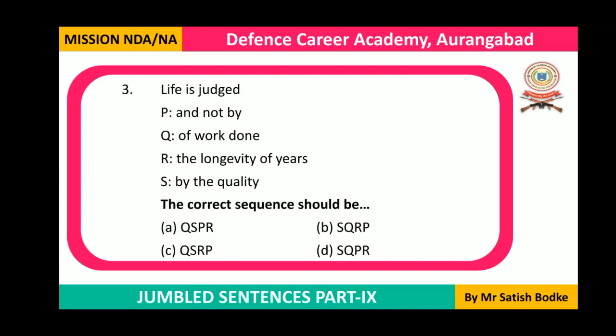Question number three: Life is judged by the quality of work done, and not by the longevity of years. The correct sequence is SQPR, which is option D. So option D is the correct answer.